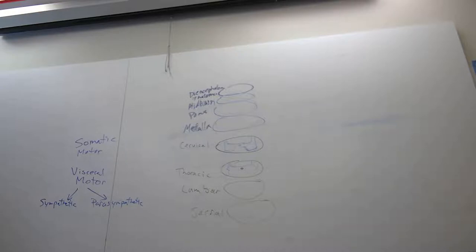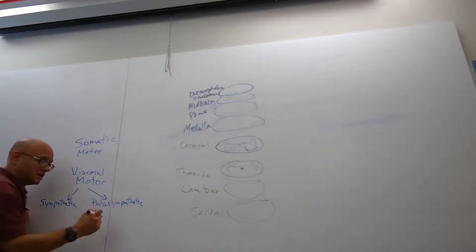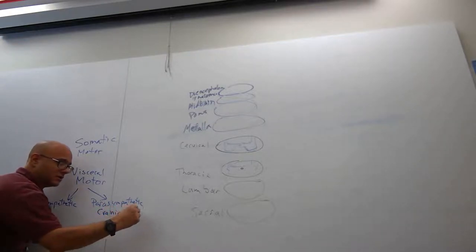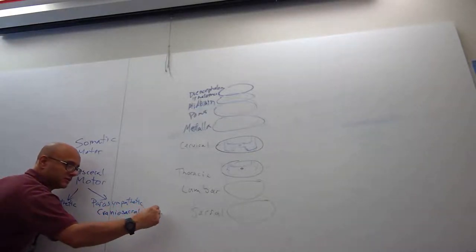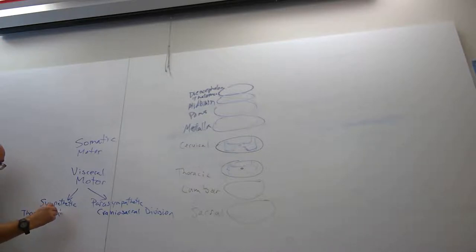It's in the name. The parasympathetic nervous system is referred to as the craniosacral division. And sympathetic is known as the thoracolumbar division. Why would they call the sympathetic nervous system the thoracolumbar division?